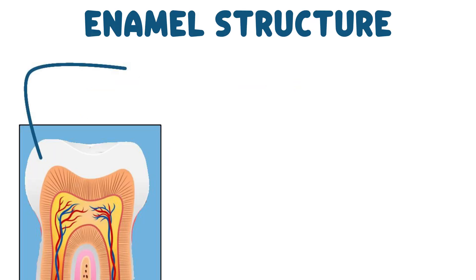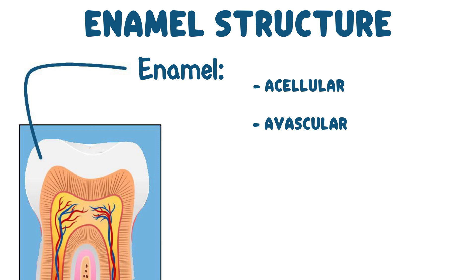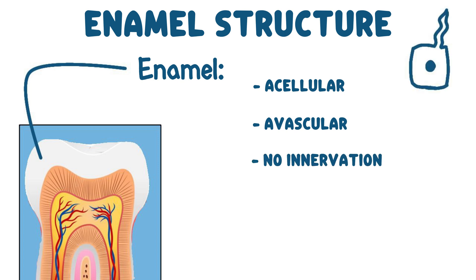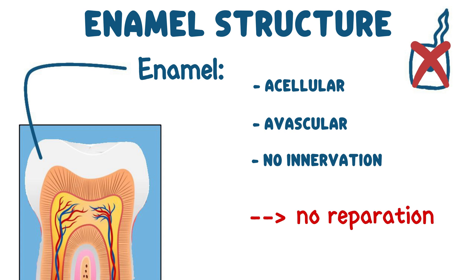Enamel is an acellular avascular tissue that lacks nerve endings. Unlike other tissues in the body, it does not contain living cells, which means it cannot repair itself. Once damaged, enamel cannot heal.